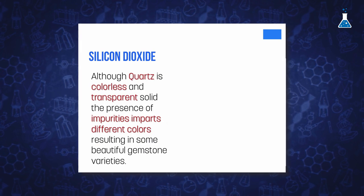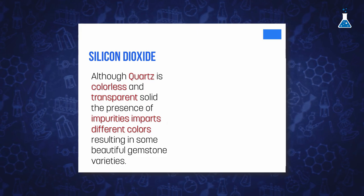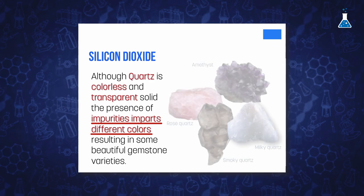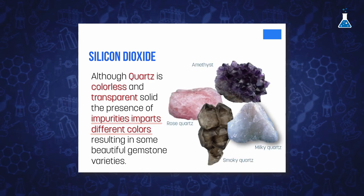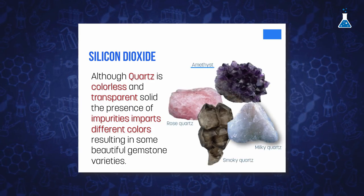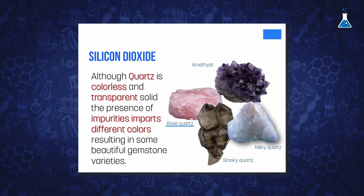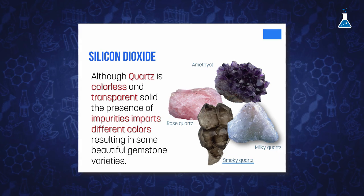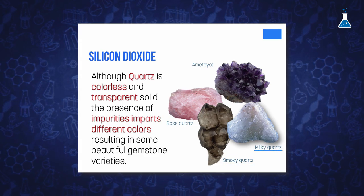Although quartz is a colorless and transparent solid, it may contain some impurities that impart color resulting in gemstone varieties such as amethyst, which shows a beautiful violet color, rose quartz which is pink, smoky quartz with brown color, and milky quartz which is white.